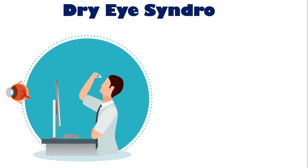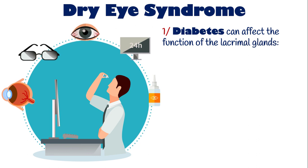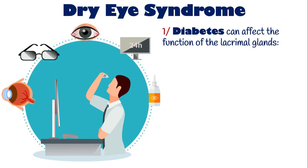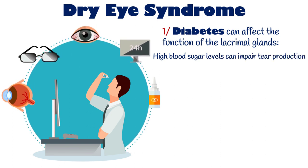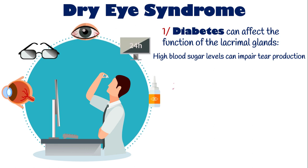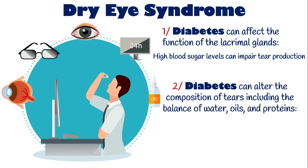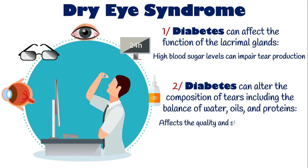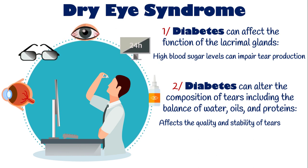Diabetes can cause insufficient moisture production in the eyes, leading to dry eye syndrome. That's because diabetes can affect the function of the lacrimal glands, which produce tears to keep the eyes lubricated. High blood sugar levels can impair tear production, leading to reduced tear volume and dryness of the eyes. Plus, diabetes can alter the composition of tears, including the balance of water, oils, and proteins. These changes can affect the quality and stability of tears, leading to increased evaporation and dryness of the eyes.